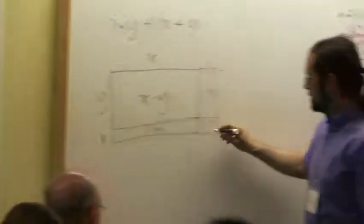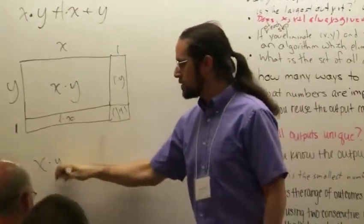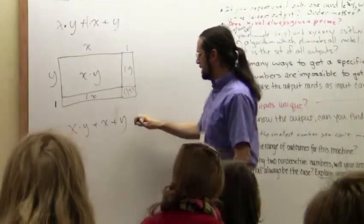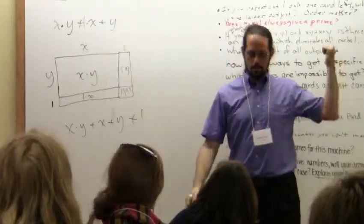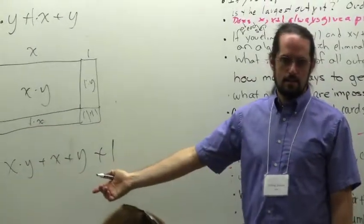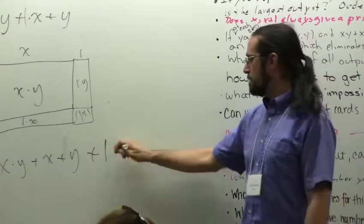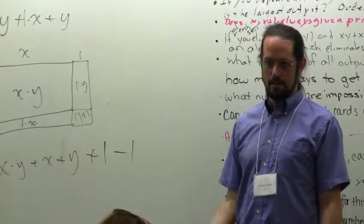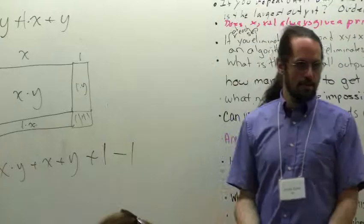I need one more, right? So what I want to do with my x times y plus x plus y is I wish I had one more, back to wishful thinking. But that's not allowed.